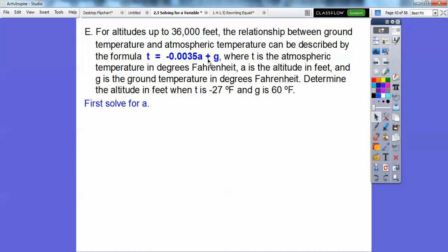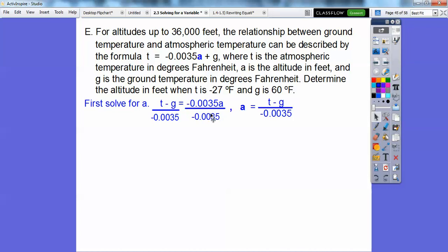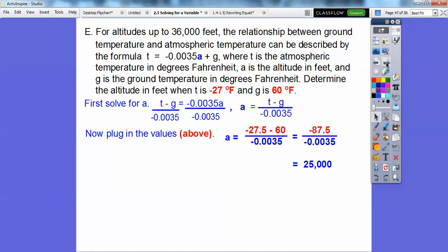So what I'm going to do is go minus G on this side and go minus G on this side. Then now we're going to divide both sides by this decimal. When we do that, we get A all by itself because those cancel. A equals this side over here. So now let's just plug in the values above. So T is negative 27 degrees Fahrenheit. And then G is 60. So here's T minus G. So it's negative 27.5 minus 60. Be careful, you guys. Negative 27.5 minus 60 is negative 87.5. And when you divide that, you get 25,000. 25,000 feet. So the altitude is going to be at 25,000 feet.